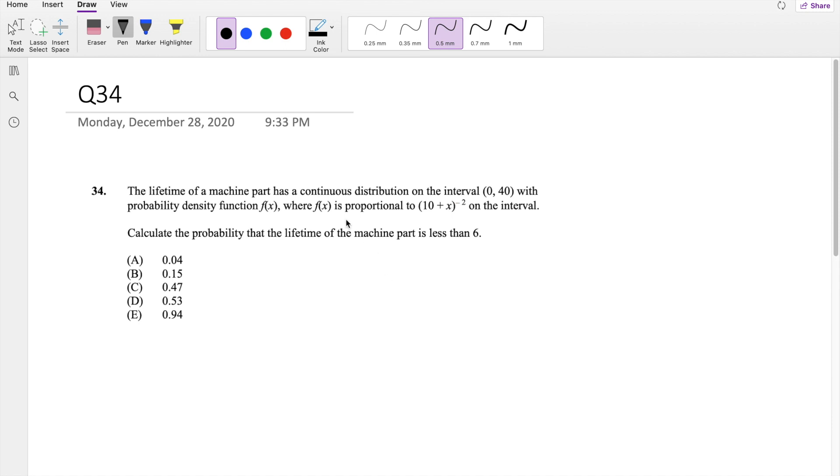So they're saying a probability function is proportional to this thingy right here on the interval 0 to 40. So that means from 0 to 40, you have to multiply by some c, there's a constant. It's proportional to the c plus x to the negative 2.